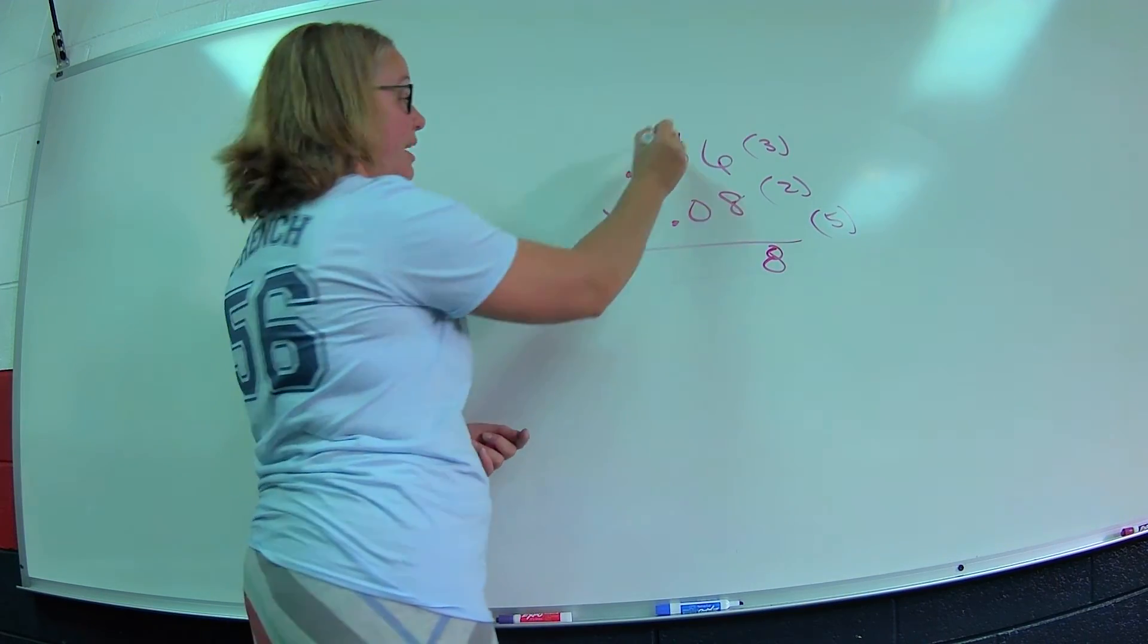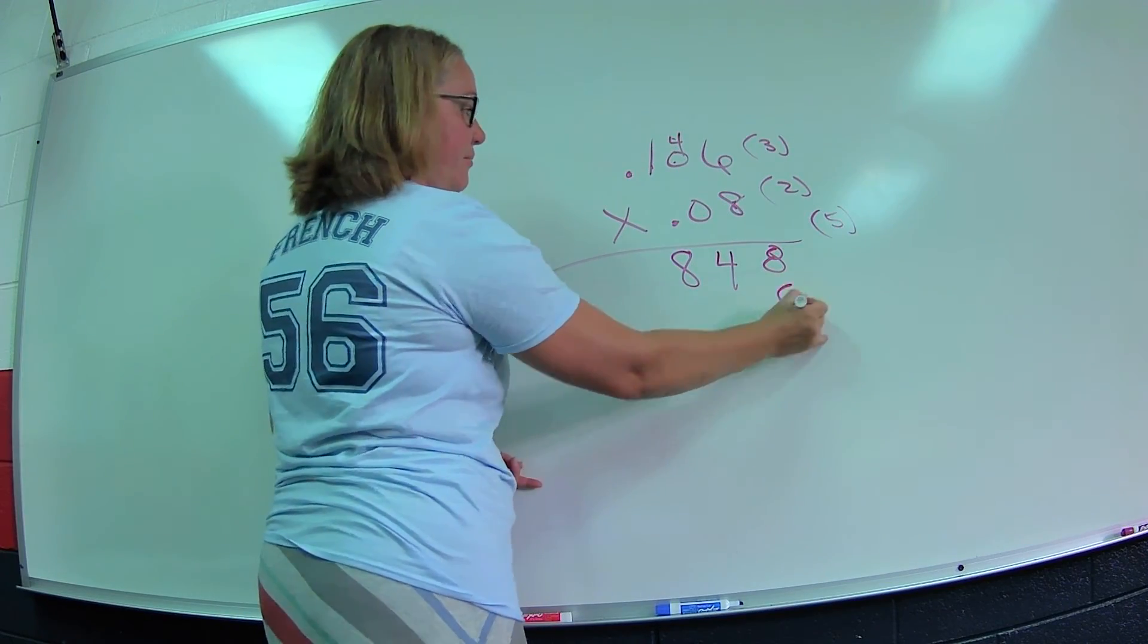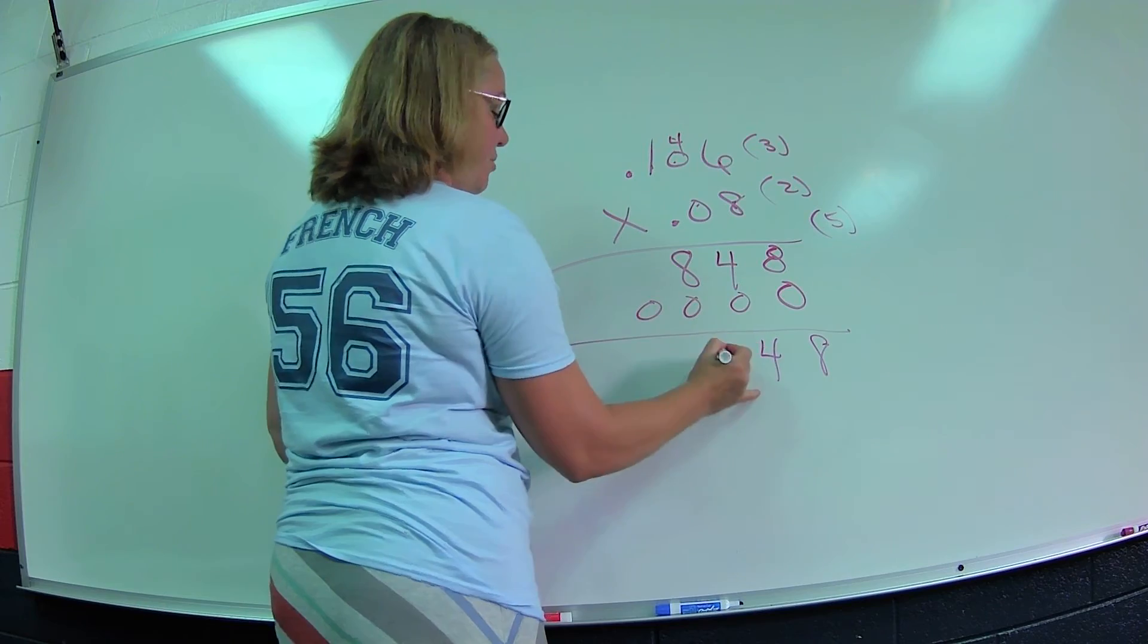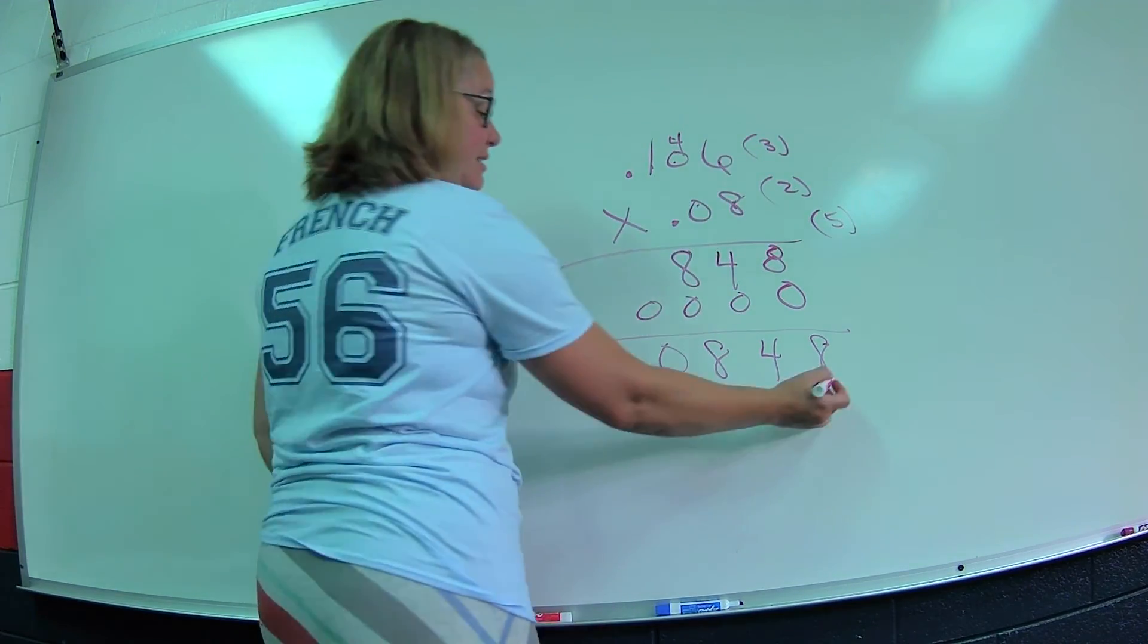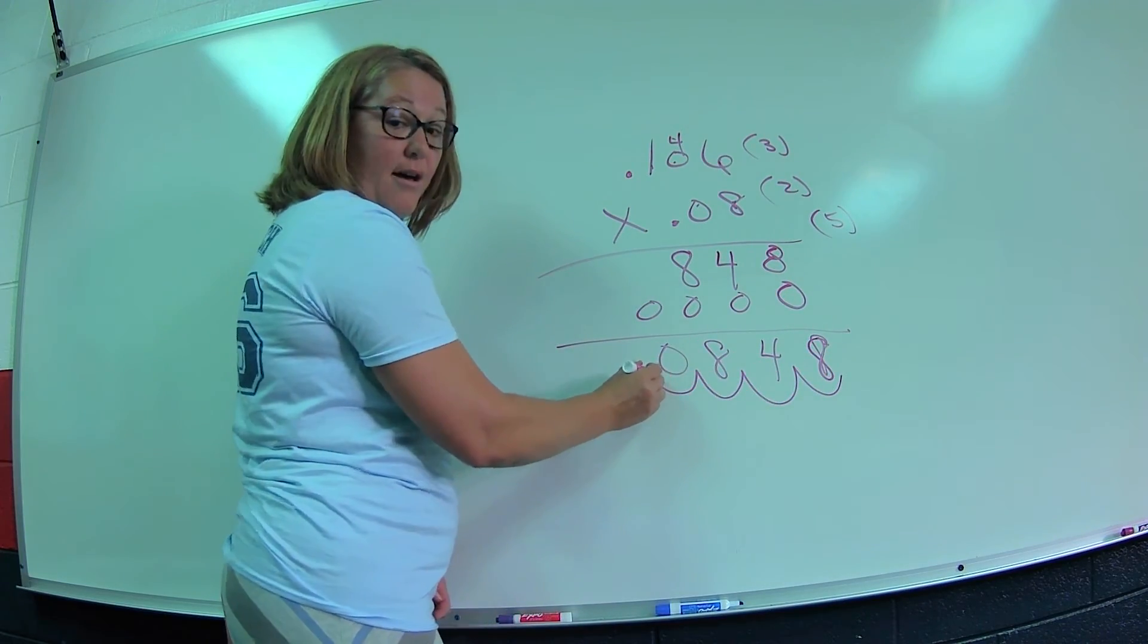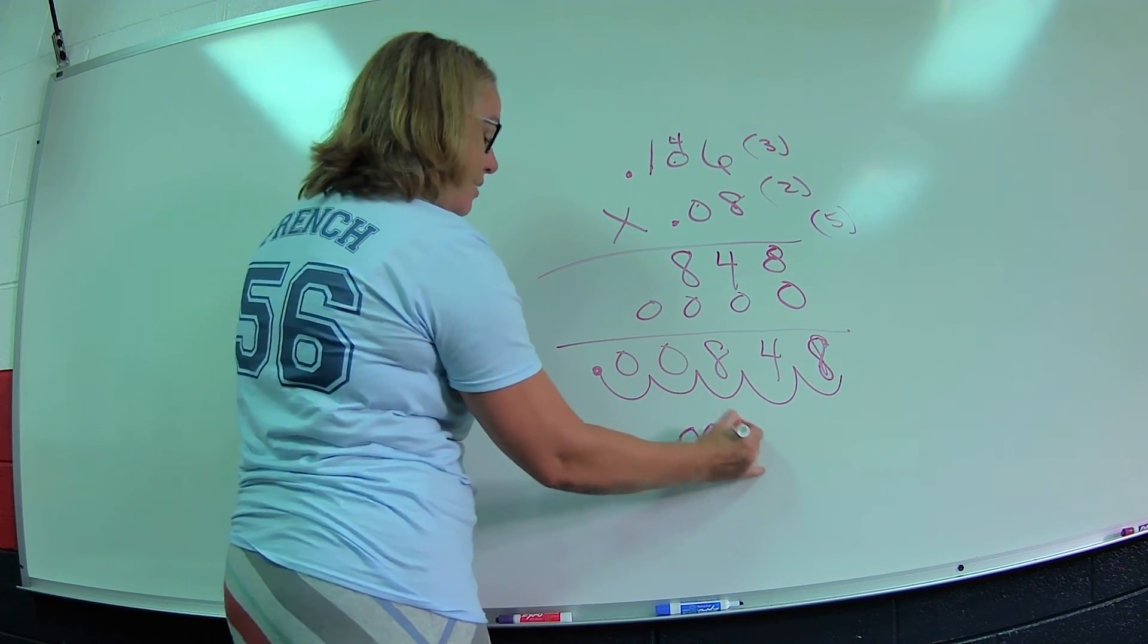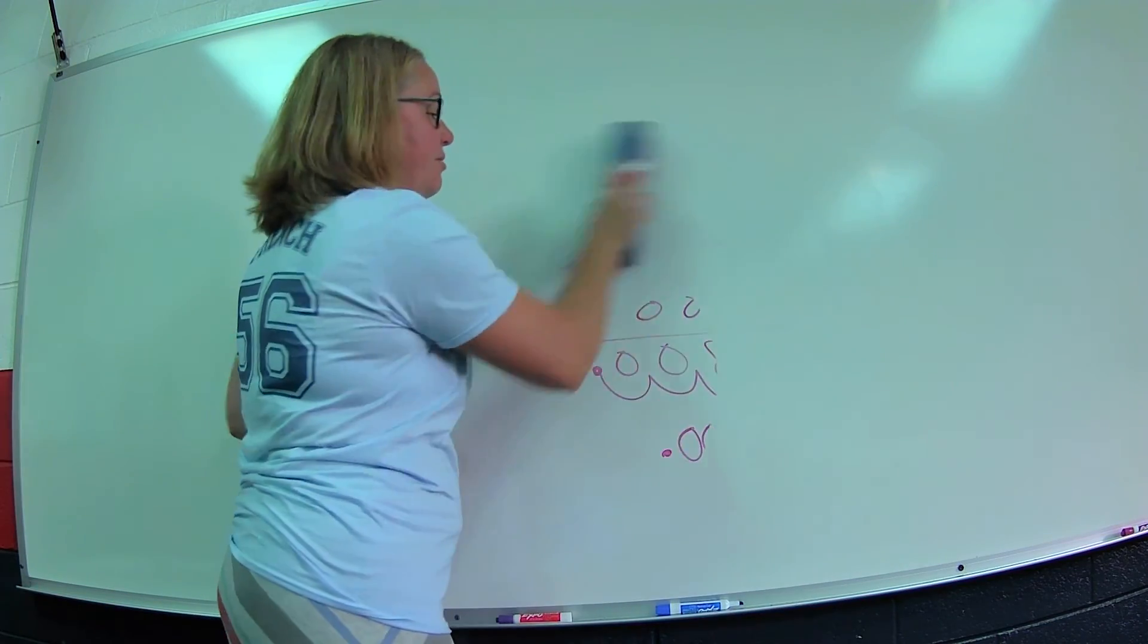We have eight times six is forty-eight. Eight times zero is zero, but I have this four. Eight times one is eight. Now I put a zero here, but notice I'm going to have all zeros. So eight, four, eight, zero. And I need five decimal places. One, two, three, four, five. That means I need to add a zero there, and it changes this place value to 0.00848.